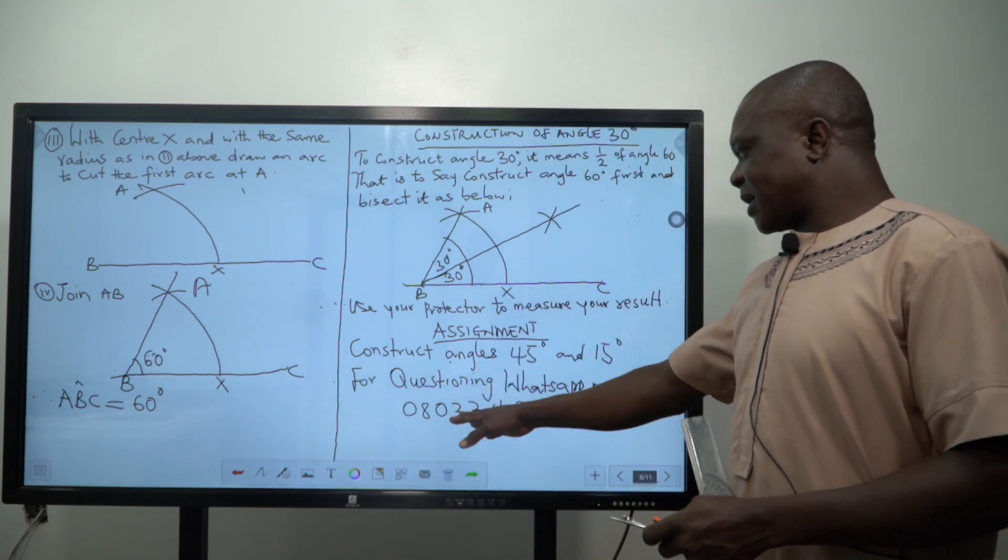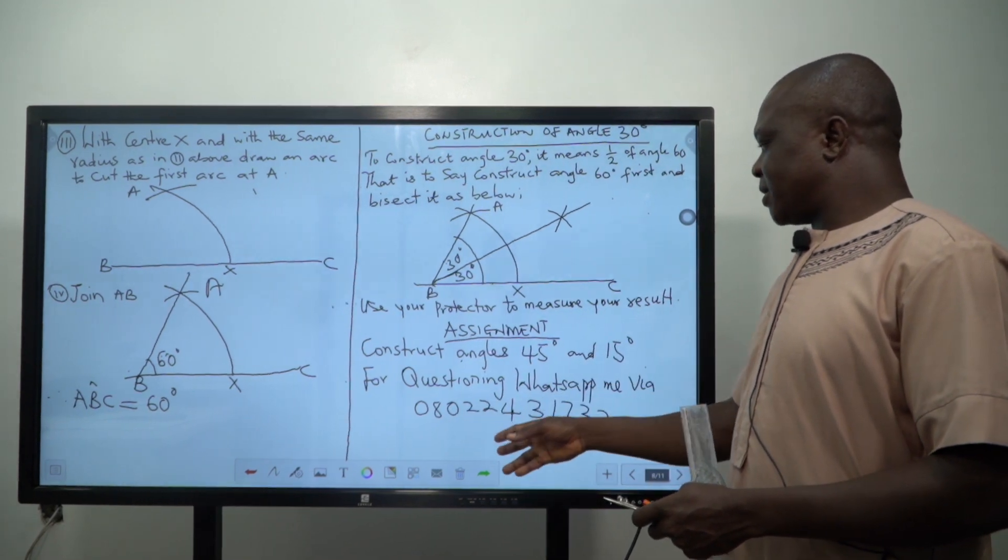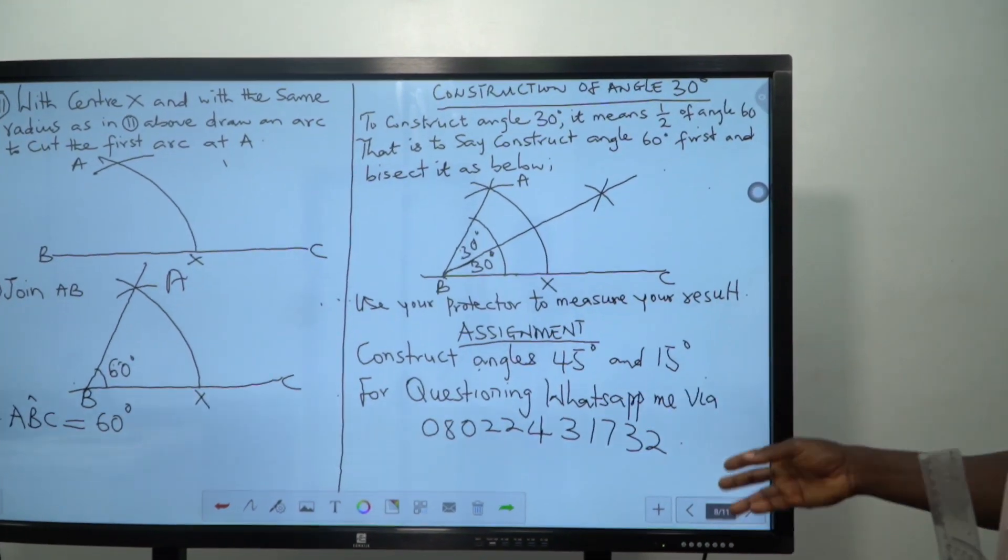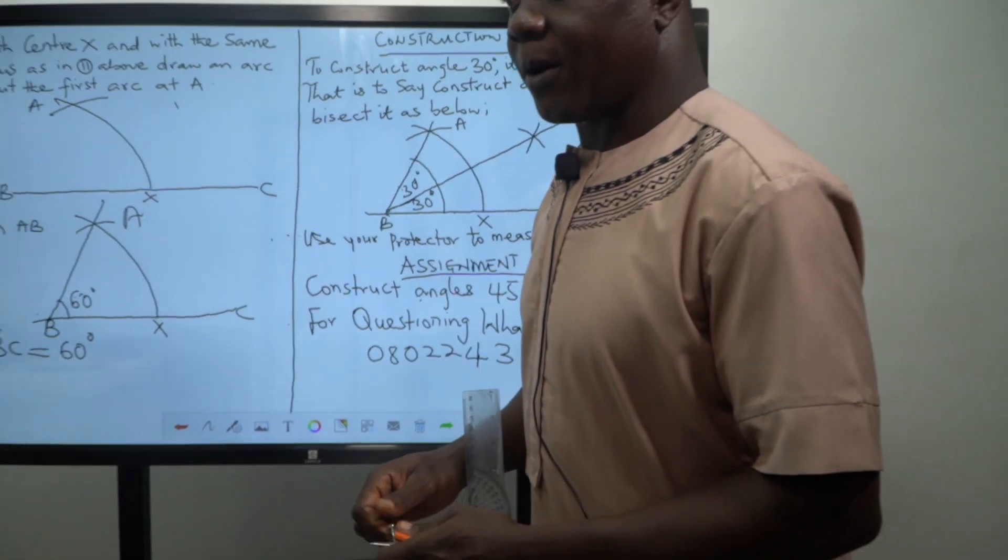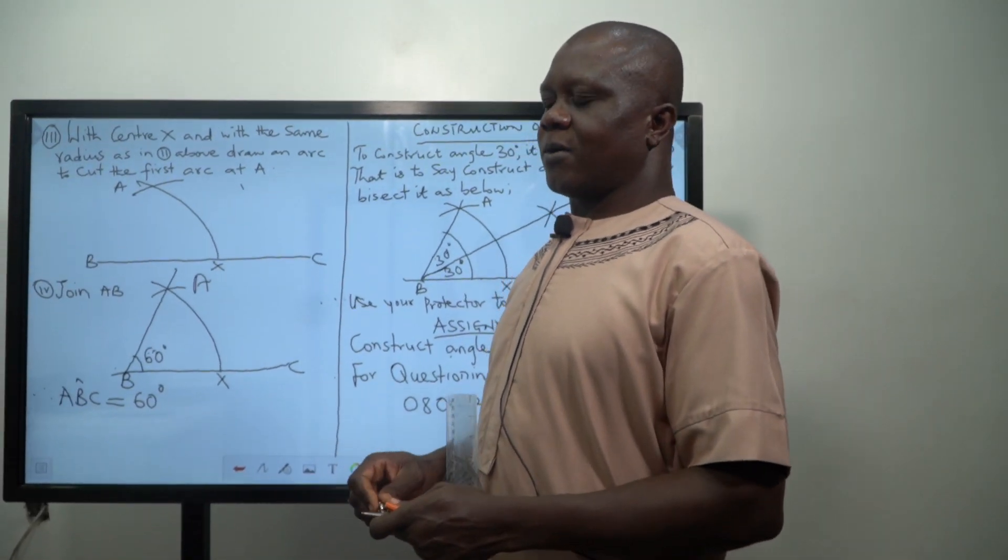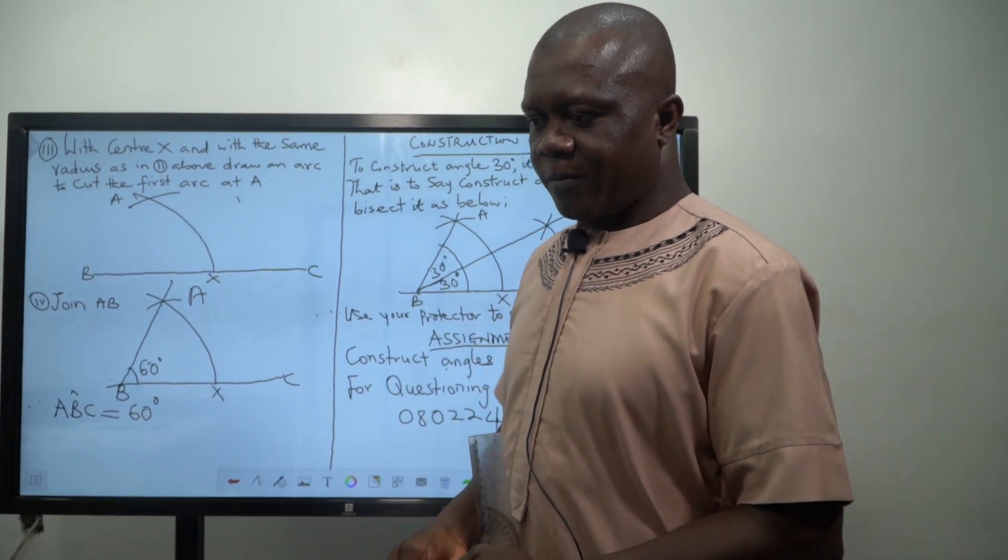That there is no way one can construct a half of 60. For questioning you can contact me via 00224317321732. I remain my humble self Mr. Namani Humphrey O. Thank you very much.